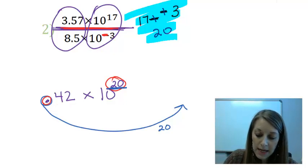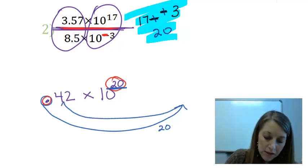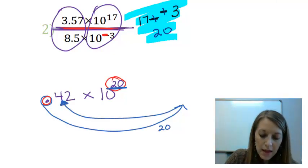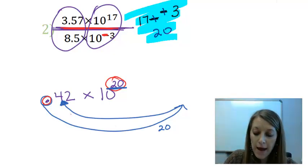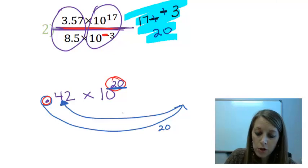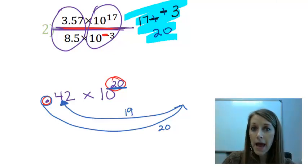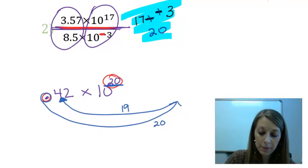But I know that my decimal needs to come back to be after my first digit here. So this line that I'm drawing back, is it a longer line than the first line that I drew over, or is it a shorter line? Well, the line that I drew back is a shorter line, which means I moved it back less places, which means my exponent is now going to become 19.